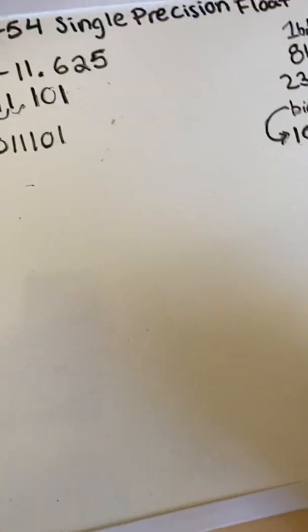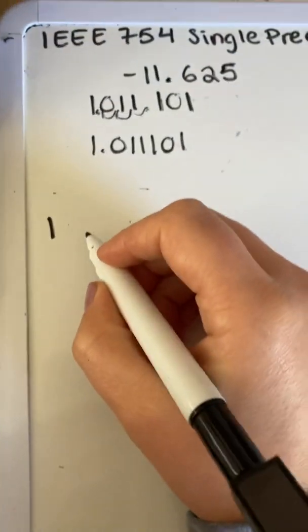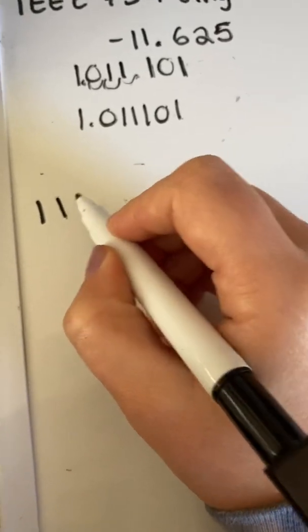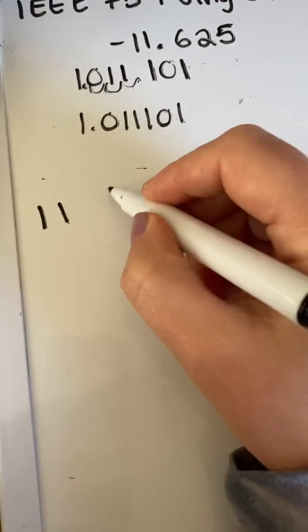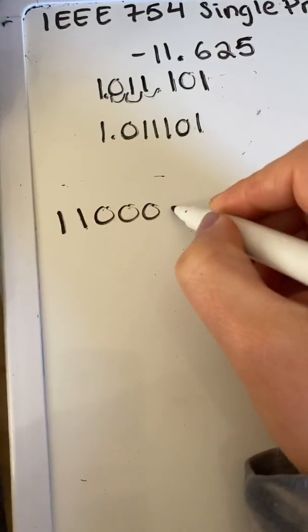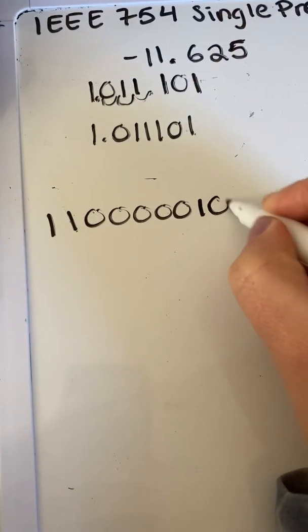So now we have our sign bit and we have our biased exponent. So let's go ahead and plug that in. So first we have our sign, which is one. And then we have our biased exponent, which is one and then five zeros, five zeros and then one and a zero.